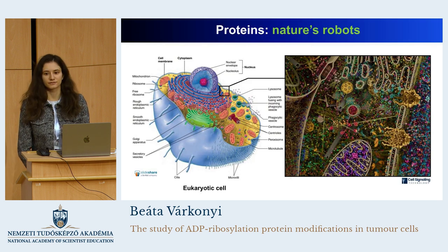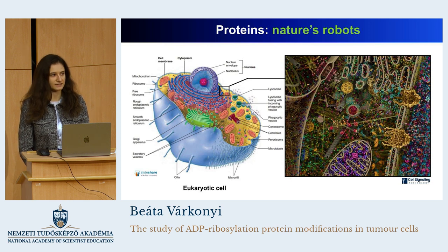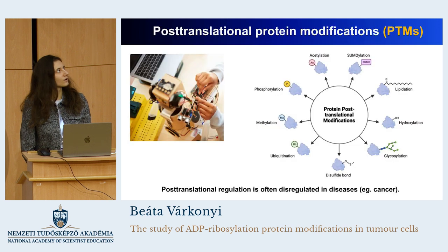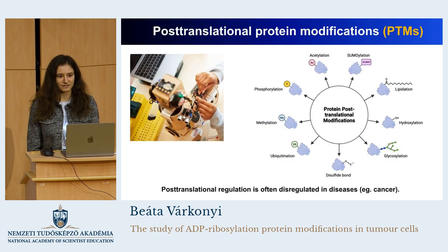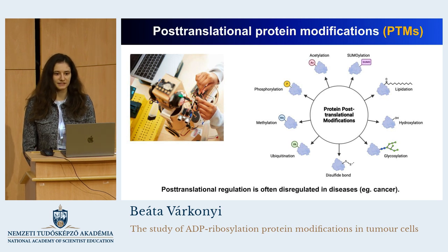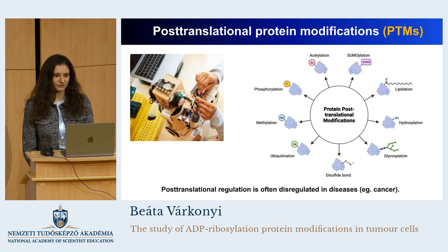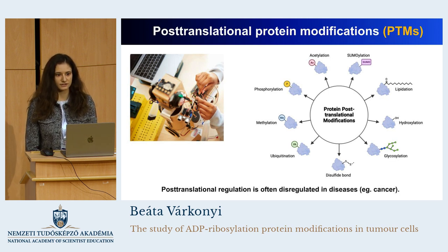Cells are full of proteins which, like tiny automated robots, perform various functions in the cell and are guided by physical chemical principles. Much like robots are controlled by switches and electronic signals, proteins can be controlled by the attachment of several chemical groups or molecules. These attachments happen after the protein has been synthesized or translated, which is why we call these modifications post-translational modifications.